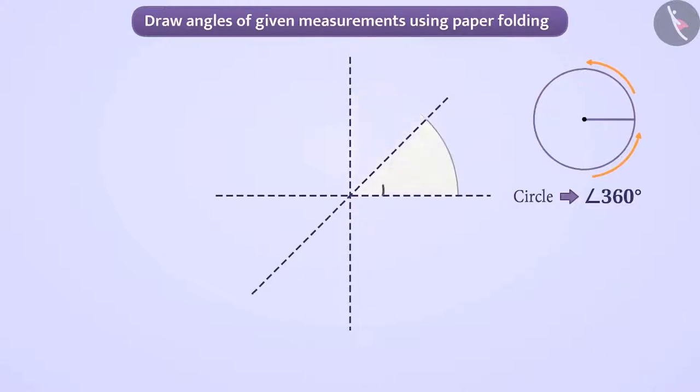Yes, we will get an angle of measure 45 degrees. If we open the circle, we will see that the circle is divided into 8 parts of 45 degrees each.